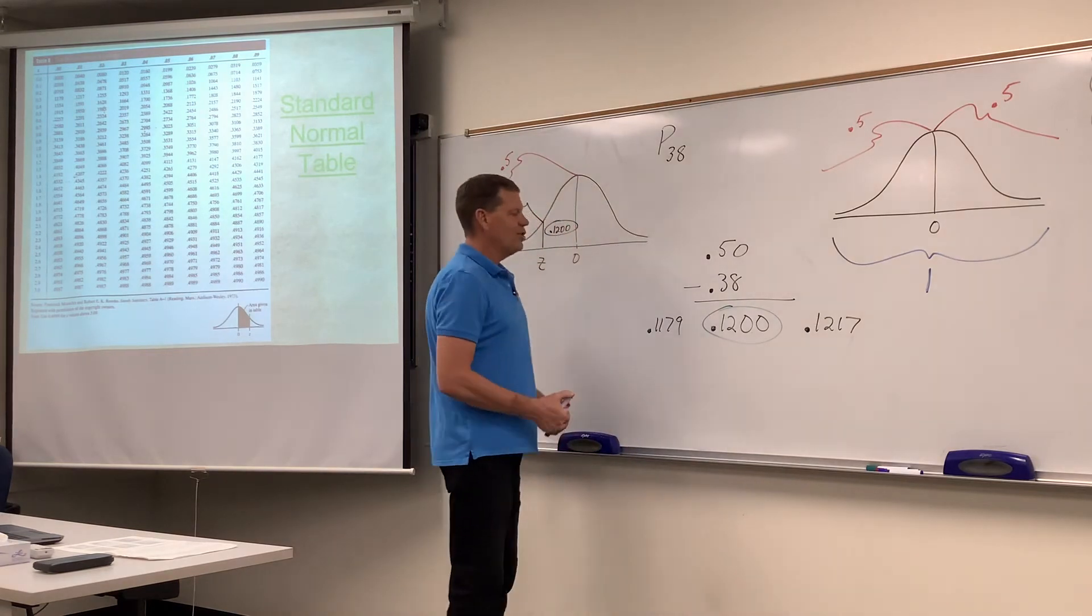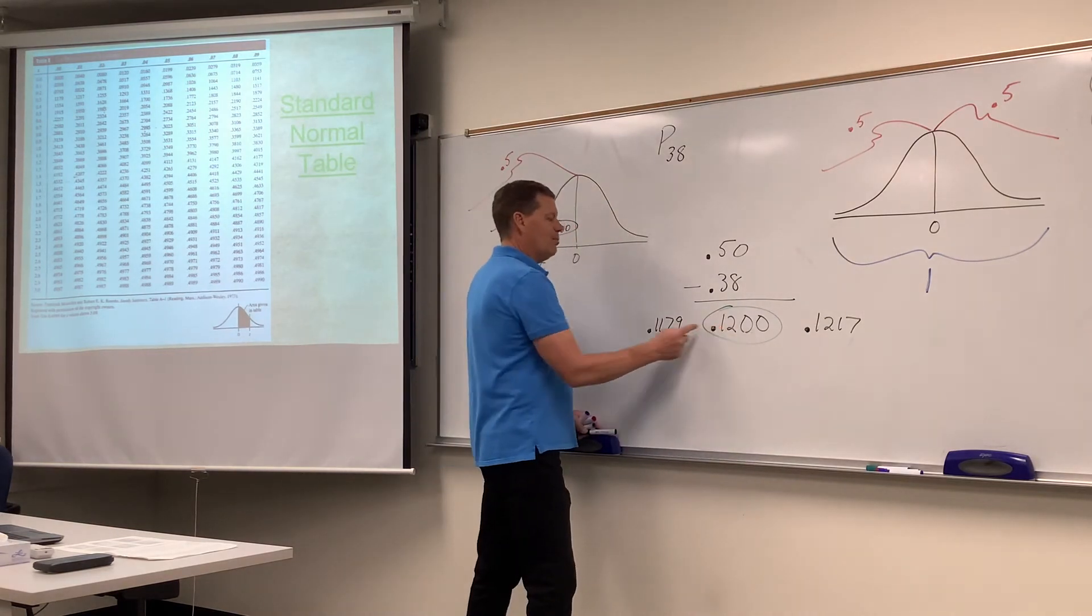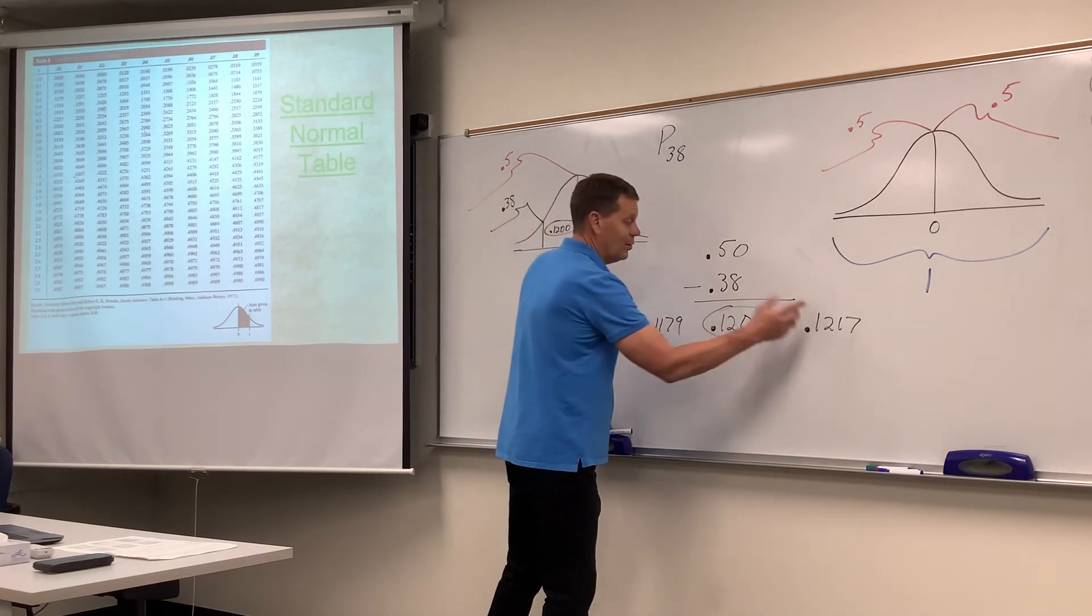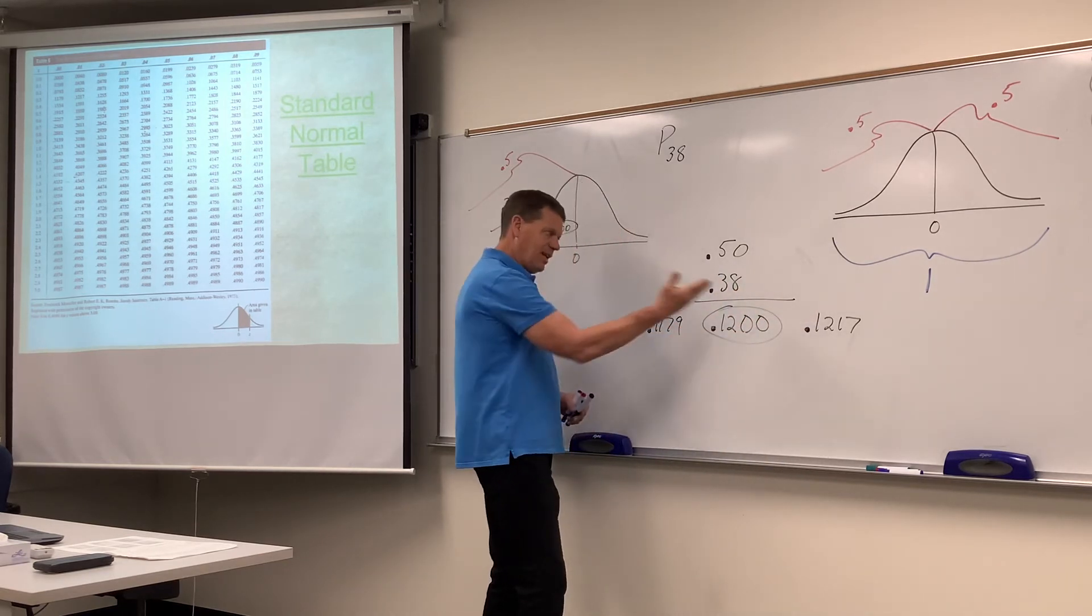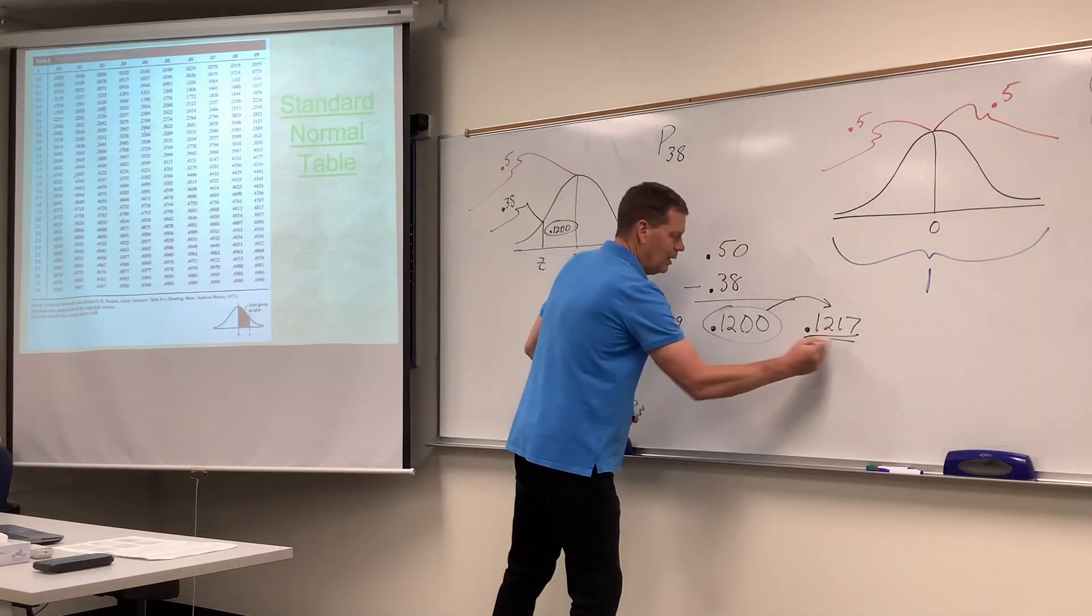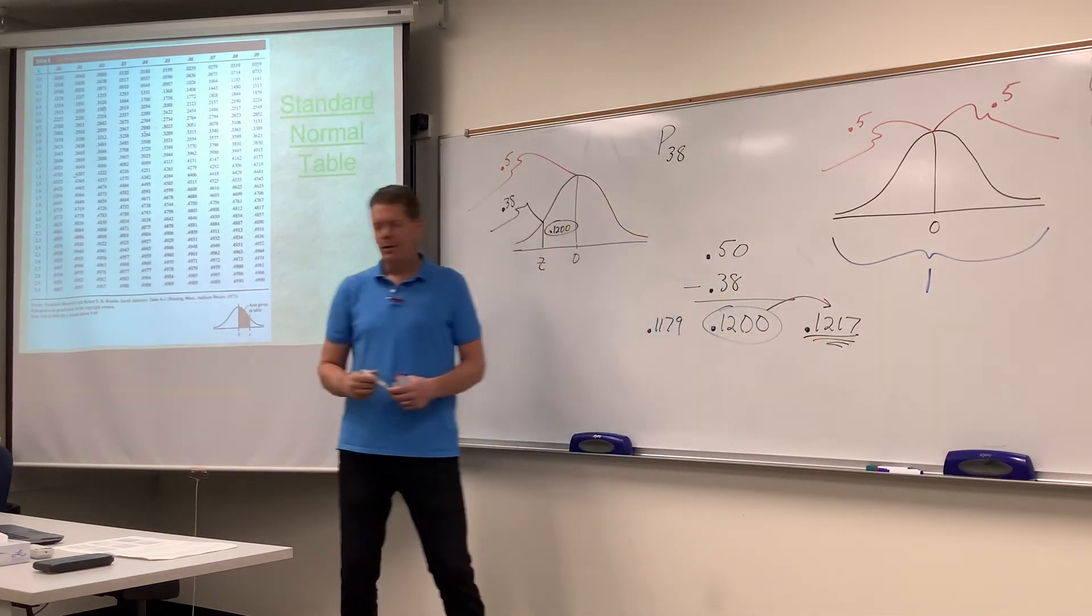So a little quick subtraction here. If you take this minus this, it's a difference of 21. And if you take this minus this, it's only a difference of 17. 17 is closer than 21. It's closer to this one. We're going to look up .1217.